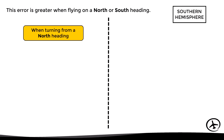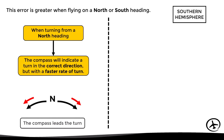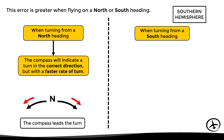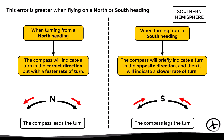In summary, in the southern hemisphere this effect is greatest on north and south headings. When turning from a north heading, the compass leads the turn. When turning from a south heading, the compass briefly indicates a turn in the opposite direction before indicating the correct direction with a slower rate of turn — the compass lags the turn.